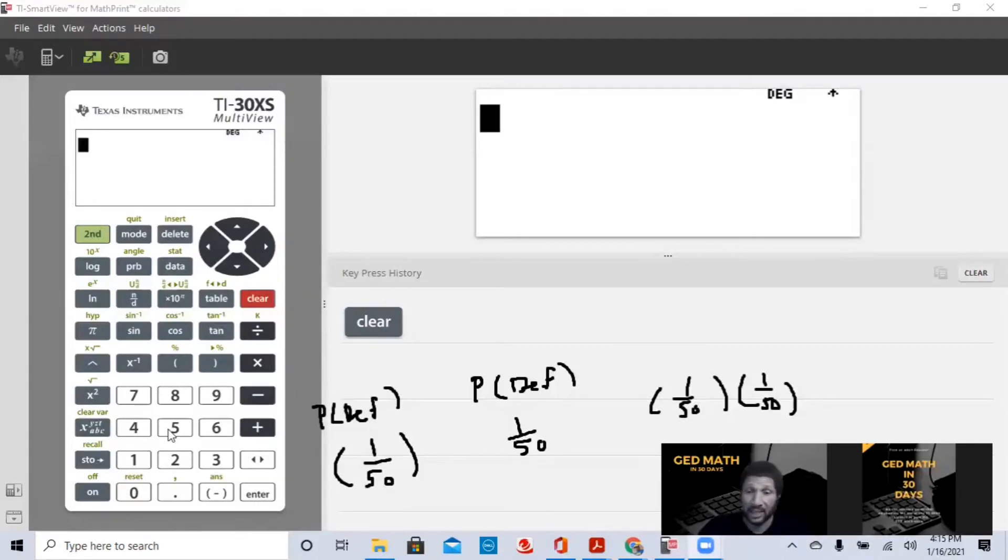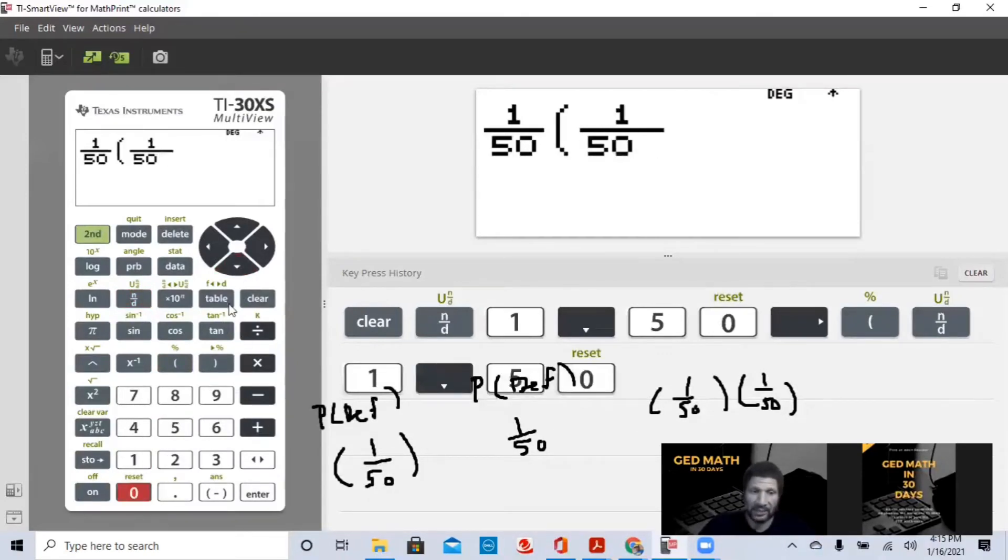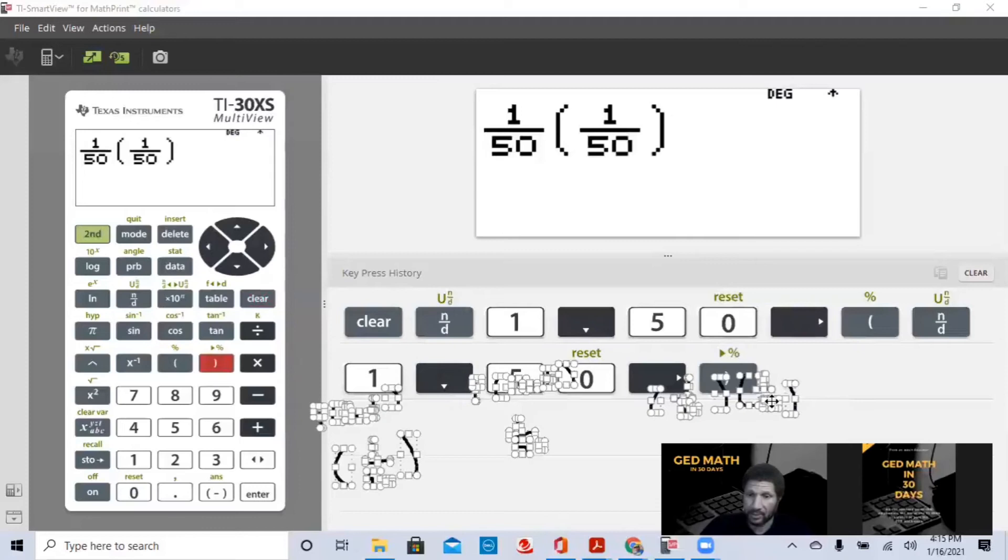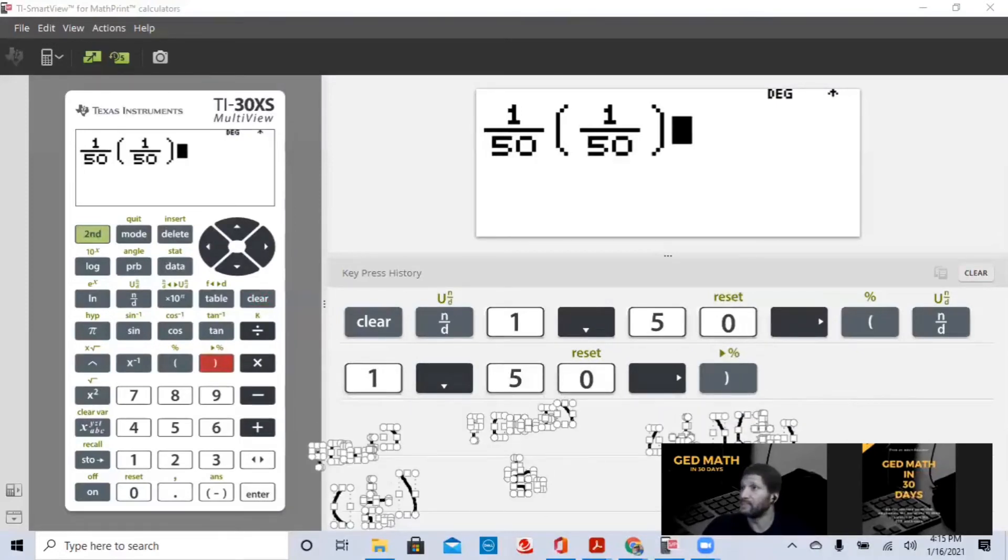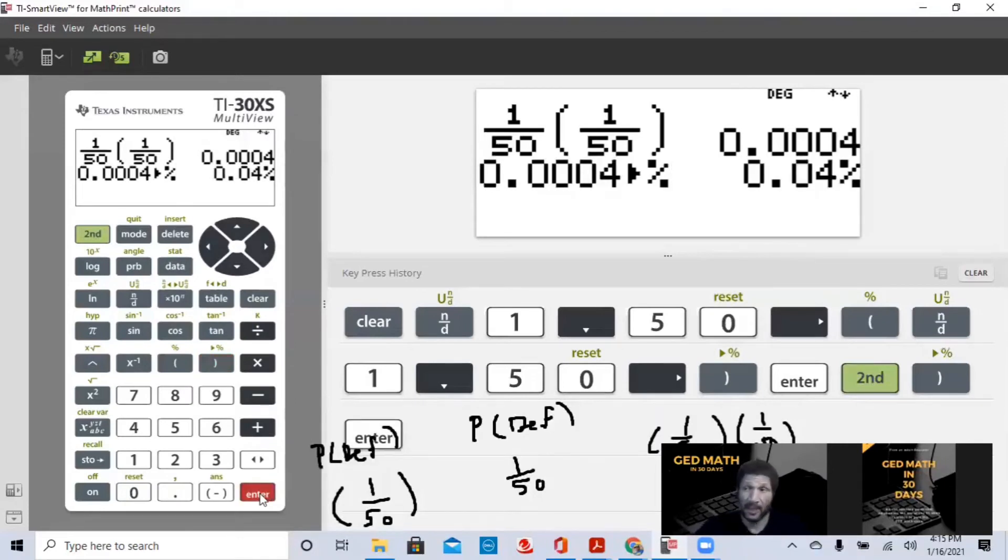Very easy. We're going to go to our calculator. That's how easy probability is. So we're going to hit ND, 1 over 50, hit our right arrow. Now we're going to enclose another 1 over 50 in parentheses because we want to multiply. You could have used the multiplication symbol. I rarely use the multiplication symbol. Let me move this down so we can see our probability. 1 over 50, we hit enter. That's the decimal. That's 0.004 if we wanted to find a percent. Convert it to a percent, which will be 0.04%.